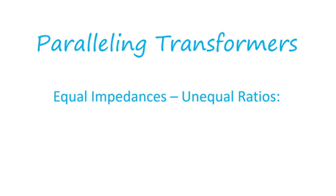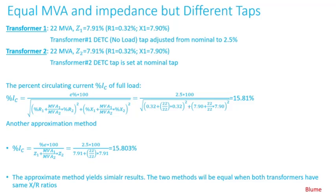In this video I'll continue the discussion on parallel transformers. We'll take a simple example: Transformer 1 is 22 MVA with an impedance of 7.91%, a resistance of 0.32%, and a reactance of 7.9%.